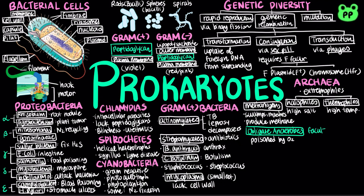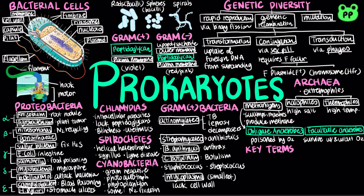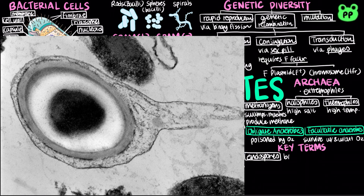In contrast, facultative anaerobes can survive with or without oxygen. Obligate aerobes require oxygen for cellular respiration. Some other key terms for prokaryotes include endospore, which is a dormant, tough, non-reproductive structure produced by some bacteria.